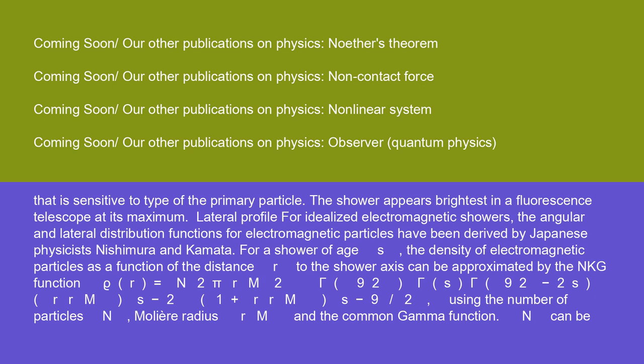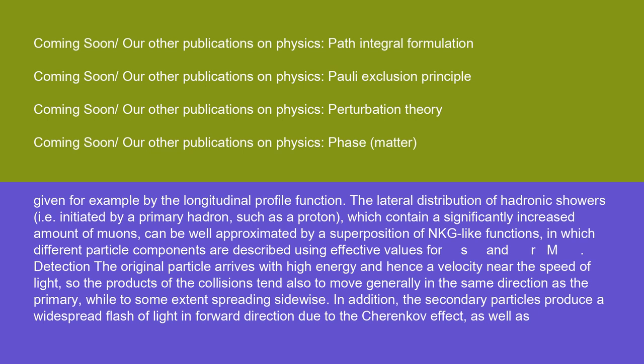Lateral profile. For idealized electromagnetic showers, the angular and lateral distribution functions for electromagnetic particles have been derived by Japanese physicists Nishimura and Kamata. For a shower of age S, the density of electromagnetic particles as a function of the distance r to the shower axis can be approximated by the NKG function rho(r) equals (N / (2 pi r_M^2)) (gamma(9/2) / gamma(S) gamma(9/2 minus 2S)) (r / r_M)^(S minus 2) (1 plus r / r_M)^(S minus 9/2), using the number of particles N, Moliere radius r_M, and the common gamma function. N can be given, for example, by the longitudinal profile function. The lateral distribution of hadronic showers, i.e. initiated by a primary hadron such as a proton, which contain a significantly increased amount of muons, can be well approximated by a superposition of NKG-like functions in which different particle components are described using effective values for S and r_M.